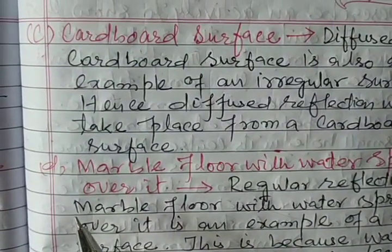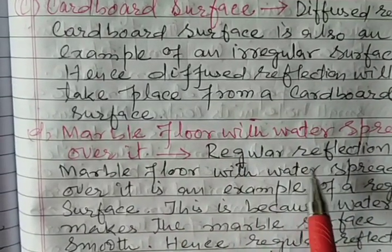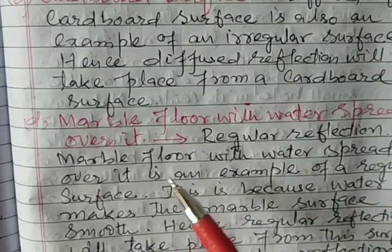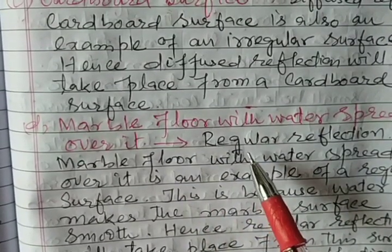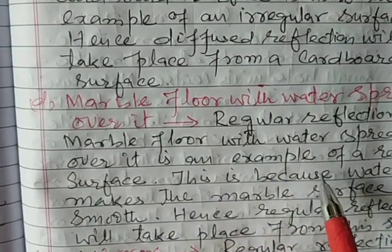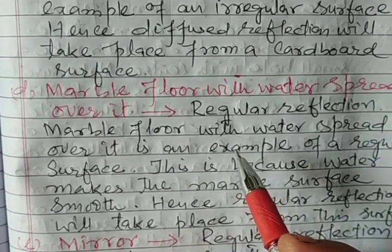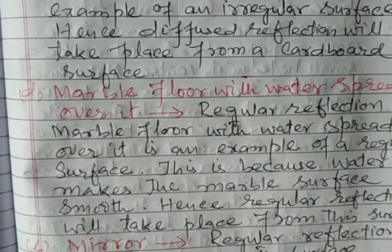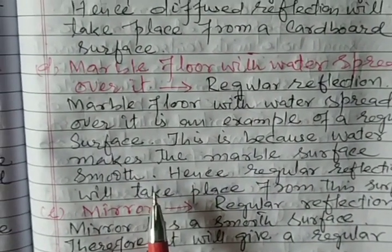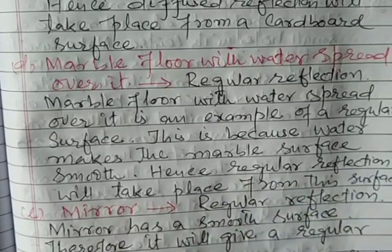Part D: Marble floor with water. A marble floor with water on it is an example of a regular surface. This is because water makes the marble surface smooth, and therefore regular reflection will take place from this surface.